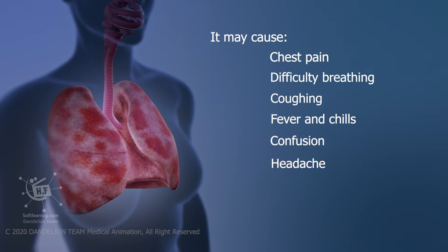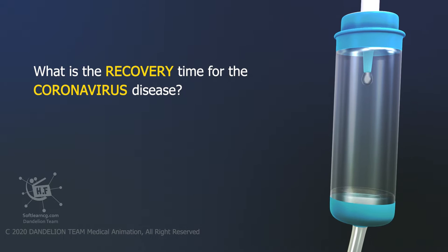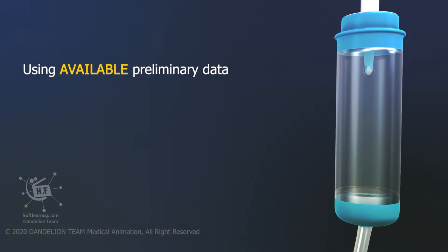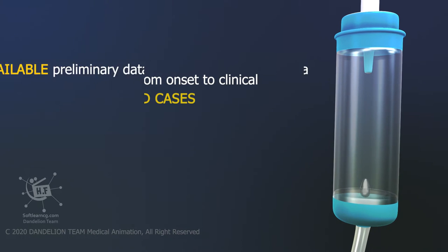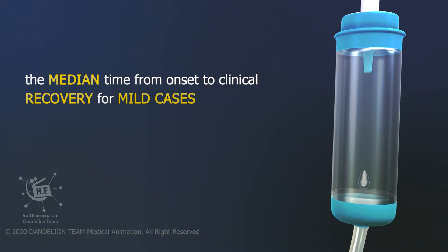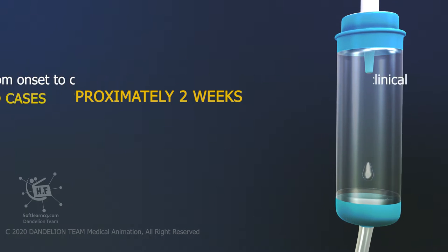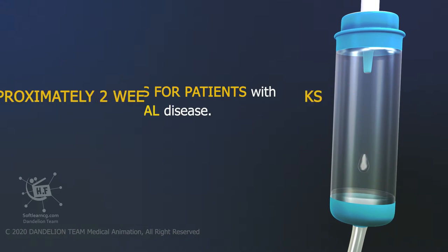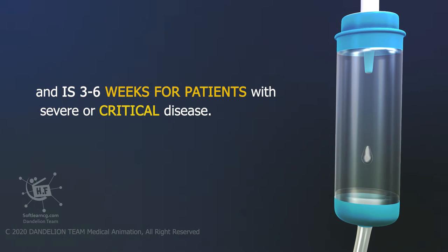What is the recovery time for the coronavirus disease? Using available preliminary data, the median time from onset to clinical recovery for mild cases is approximately two weeks, and is three to six weeks for patients with severe or critical disease.